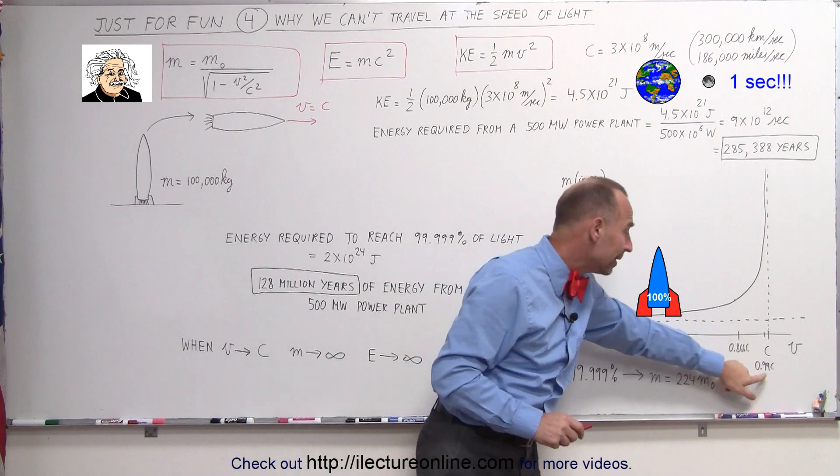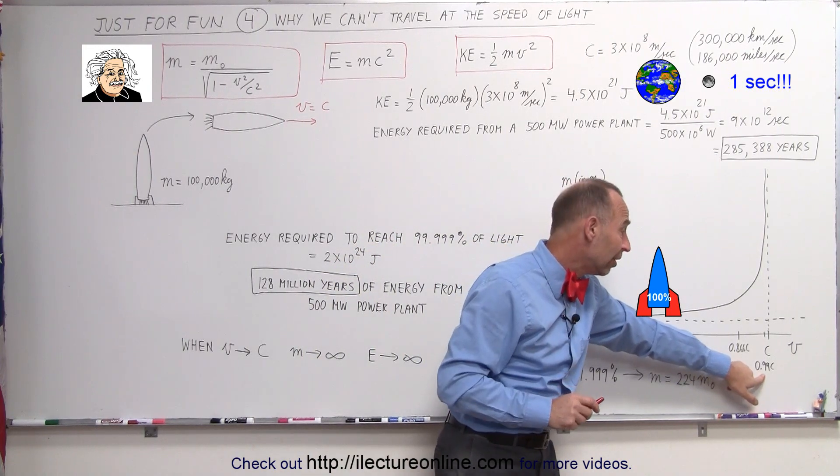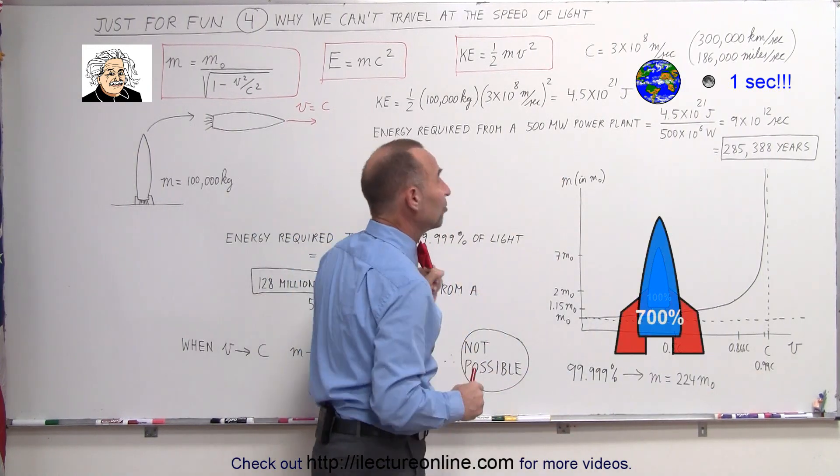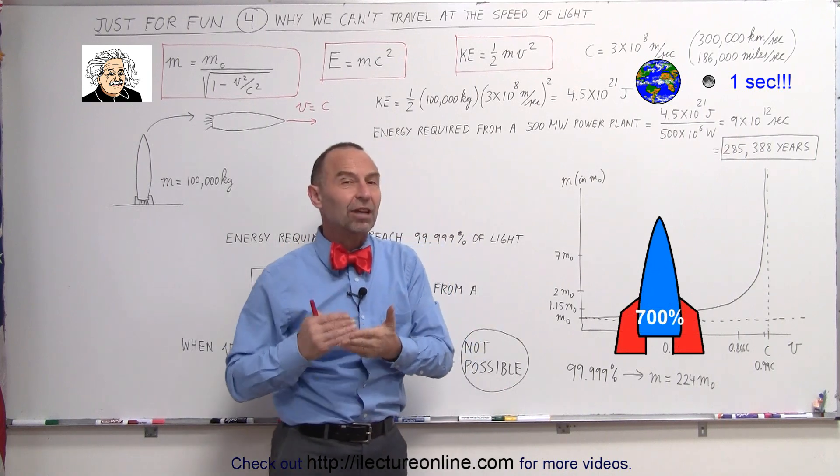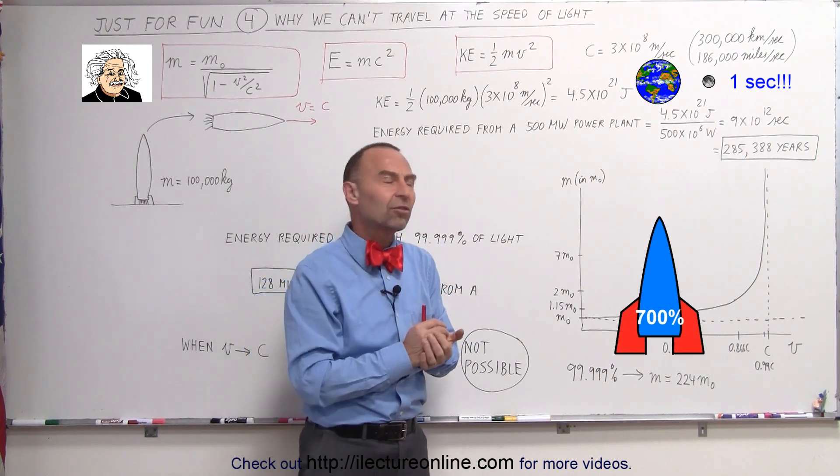By the time you get to 99% of the speed of light, the mass of the spaceship will now be seven times as much. The mass will now be 700,000 kilograms.